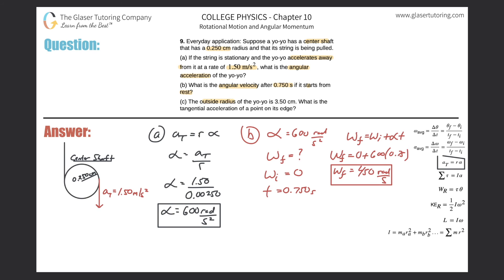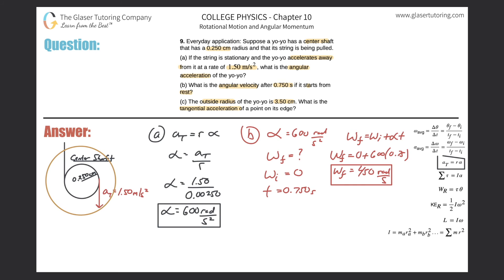Now Part C: the outside radius of the yoyo is 3.5 centimeters — what is the tangential acceleration of a point on its edge? The yoyo's outer ring is wider than the inner center shaft where the string winds up. We want to find the tangential acceleration at the outer edge, where the radius is 3.5 centimeters.